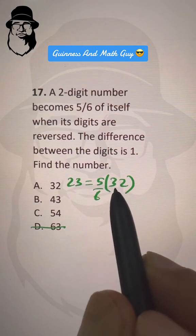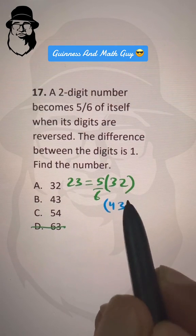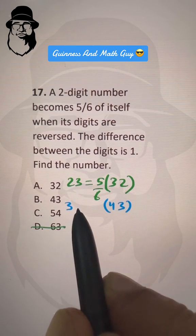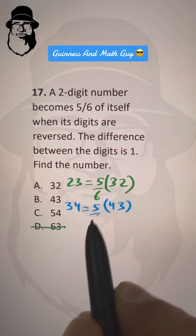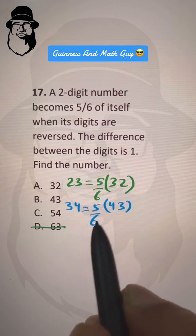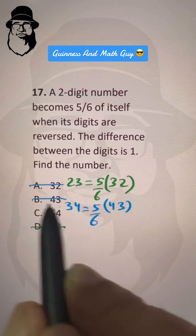If I do the same thing - 43, and reverse the digits to make it 34, it becomes 5/6 of itself. But we know 43 is not divisible by 6, so this choice is gone. This choice is gone. We are left with this choice.